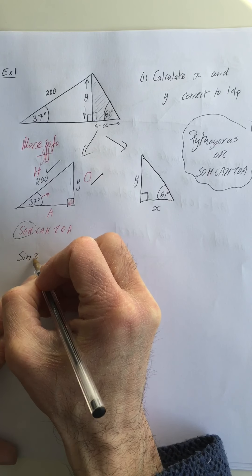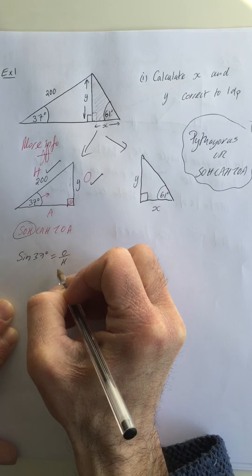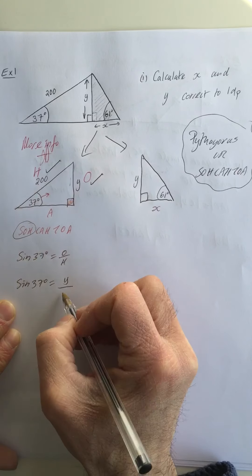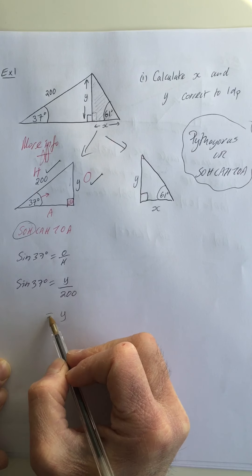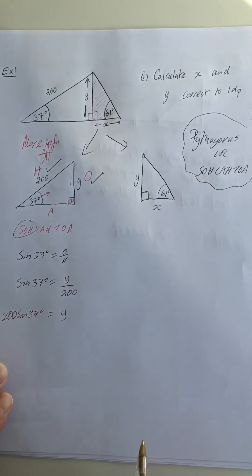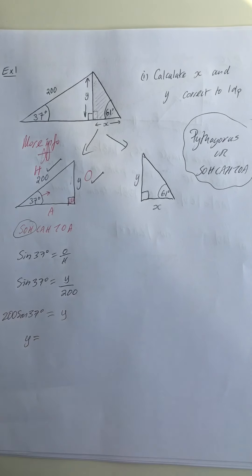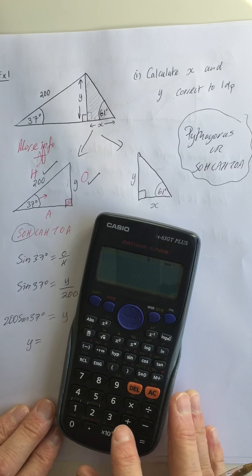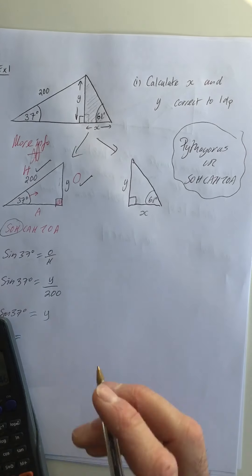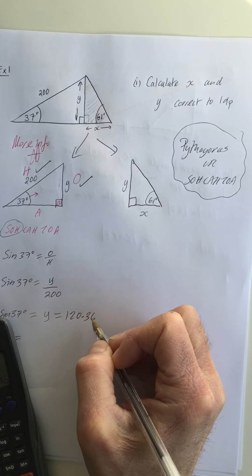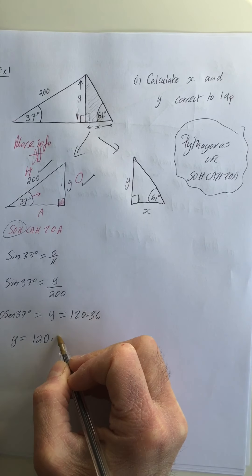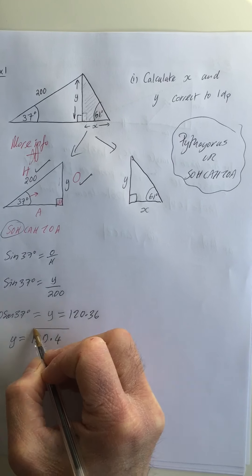I want to know what y is, which is O. I know what H is. So which one has O and H in it? It's sine. So then I say sine of 37 degrees is equal to O over H. So the sine of 37 degrees will be my O number, which is y, over my H number, which is 200. Notice my letter is on top, so to get rid of a divide by 200, I multiply by 200. So y is going to be 200 multiplied by sine 37. I can put that into my calculator—make sure my calculator is on degree mode. 200 sin 37 degrees equals 120.36. Now they want it correct to one decimal place, so I'm going to write y is equal to 120.4. And there's no units given in this one, so there's one of my answers.